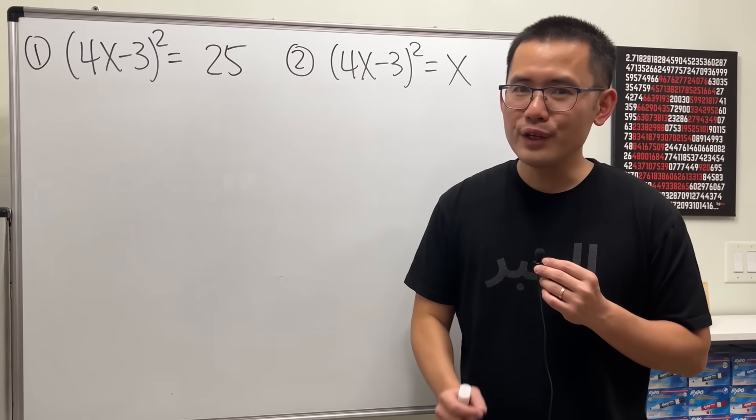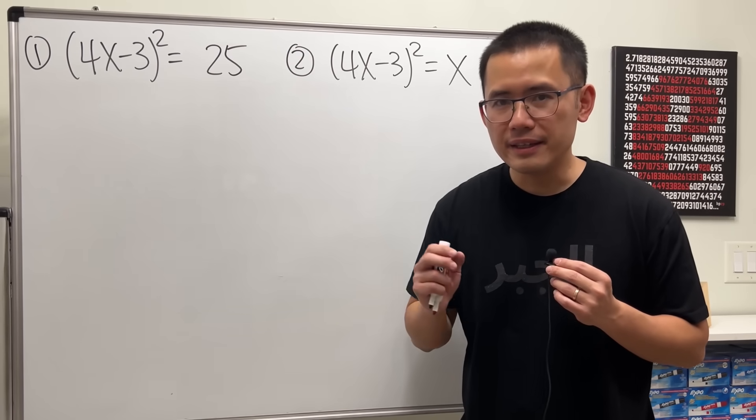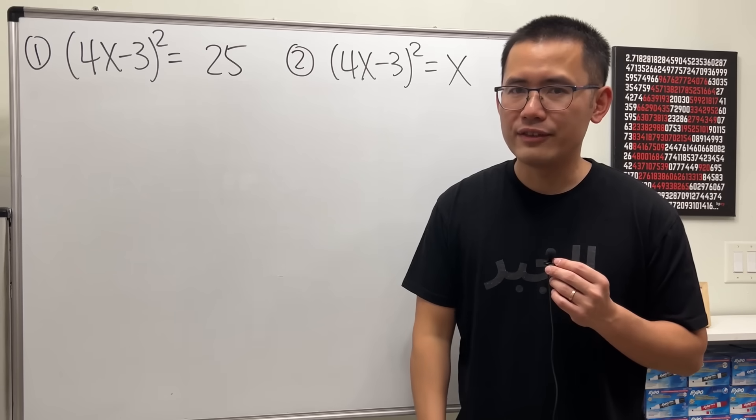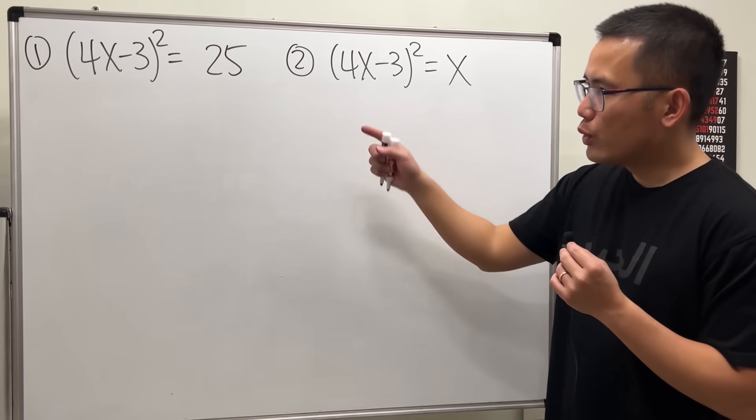So let's talk about when you are solving a quadratic equation by taking the square root on both sides, what you have to be careful with. We have two equations on the board.